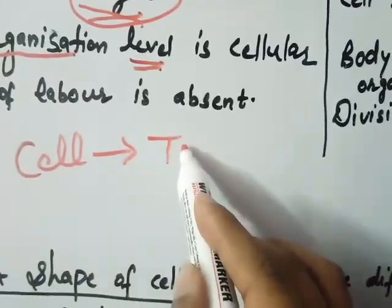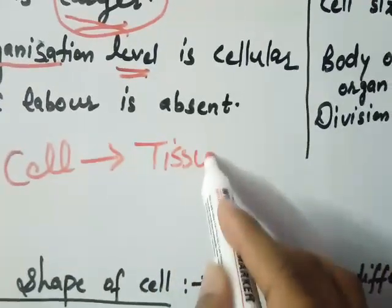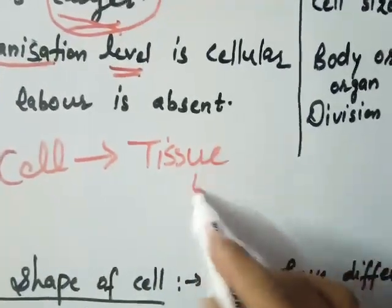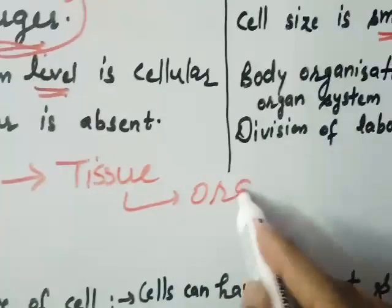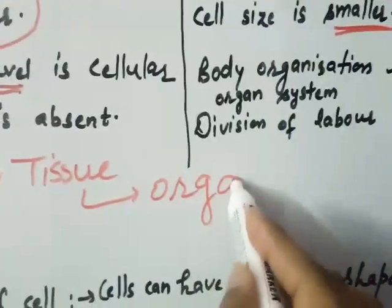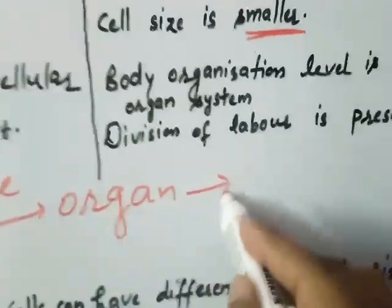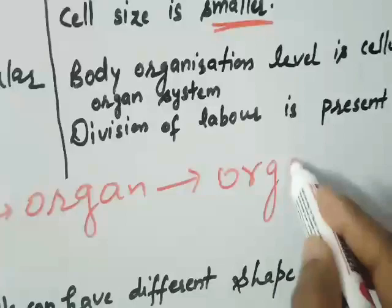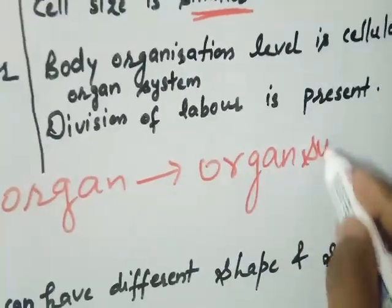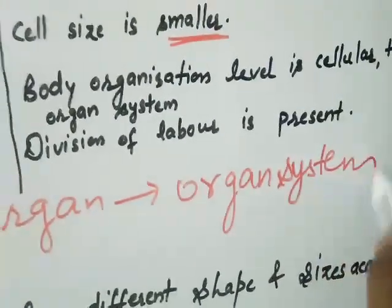Cells can group together to form tissue, tissue can group to form organs, and organs can group to form organ systems. So body organization can be at the cellular, tissue, organ, or organ system level.